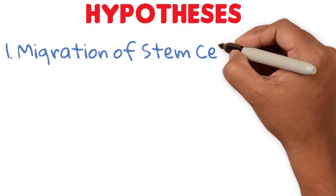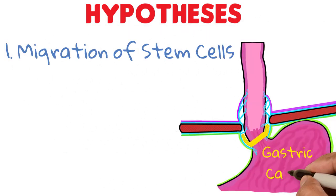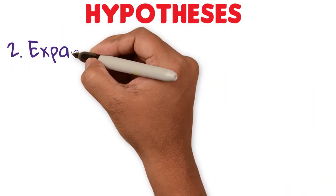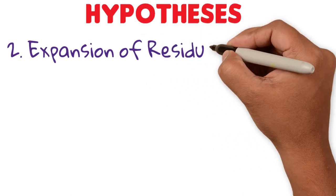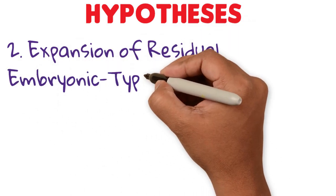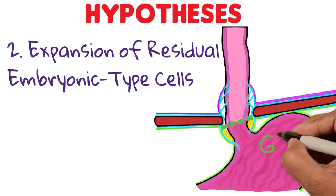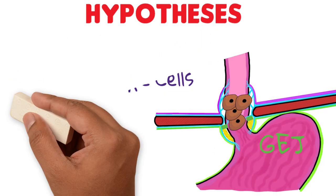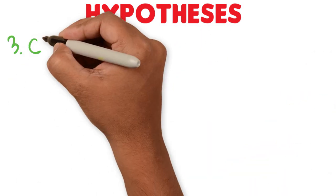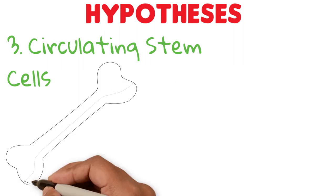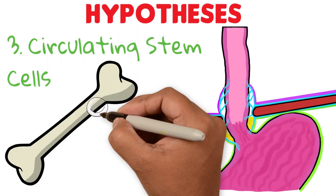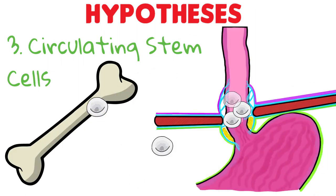Hypotheses include: migration of stem cells from the gastric cardia; expansion of residual embryonic-type cells located in the gastroesophageal junction; or circulating stem cells from the bone marrow being transported to the damaged esophagus.